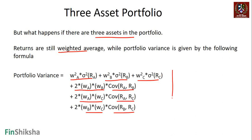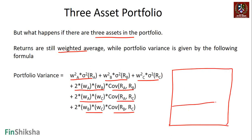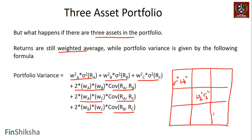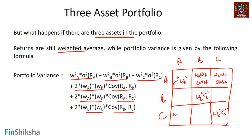In a three-asset portfolio, you create a matrix that is 3×3. If it is a four-asset portfolio it will be a 4×4 matrix. The diagonal terms are wA²·σA², wB²·σB², and wC²·σC². The off-diagonal terms are: wA·wB·cov(A,B), wA·wC·cov(A,C), and wB·wC·cov(B,C).